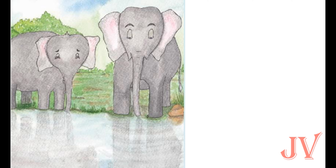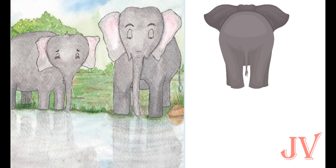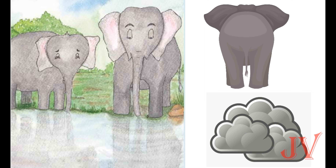Now see the picture and guess two things about Banjo's tail. Yes, it is tiny and gray in color. Tiny means very small. Do you know how the color gray looks like? Yes, see the cloud is gray in color.